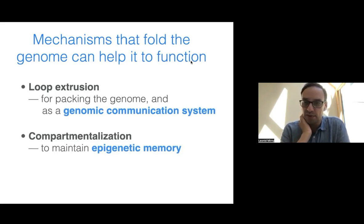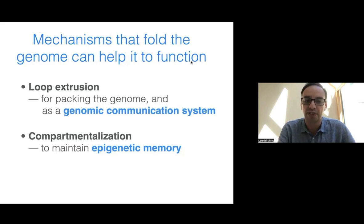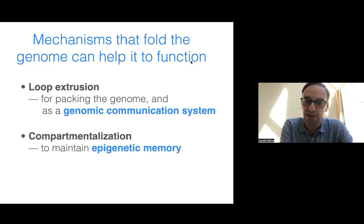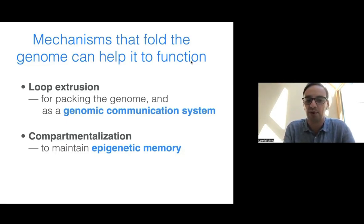I'll try to communicate our current understanding of mechanisms that organize chromosomes and think about their functional role. The summary of what I'll be talking about today is that one of the mechanisms essential for chromosome organization—loop extrusion—may actually have a function of facilitating long-range genomic interactions, essentially serving as a genome communication system.